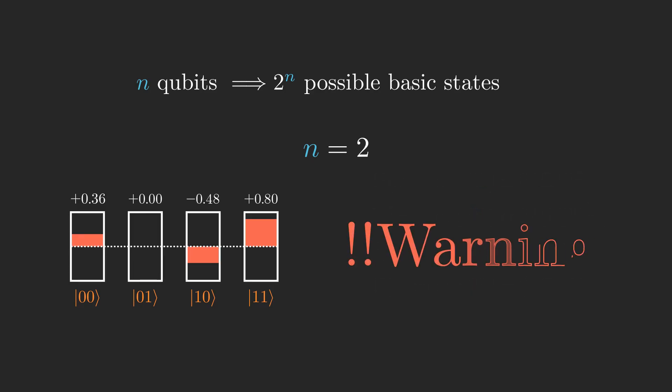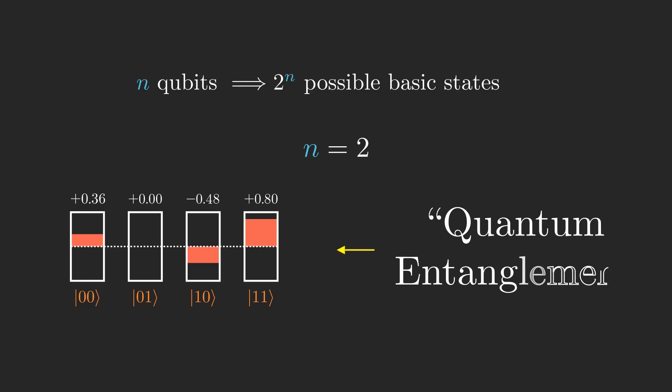Note here that while it may be instinctual to think this, it is not the case that each qubit on its own has an amplitude on 0 and an amplitude on 1. Together, the qubits jointly have an amplitude on each of their 2 to the n basic states. This is what is known as quantum entanglement.